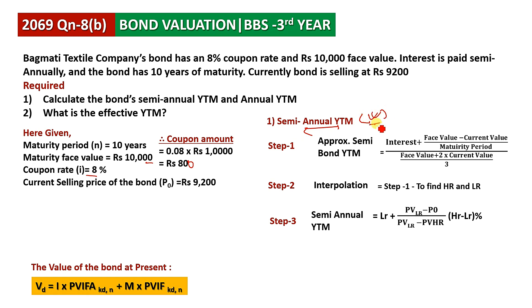We have three steps to solve this problem. Step 1 is to find the approximate YTM using a formula: interest plus face value minus current value divided by maturity period, all divided by face value plus 2 times current value divided by 3. This gives us an approximate rate.